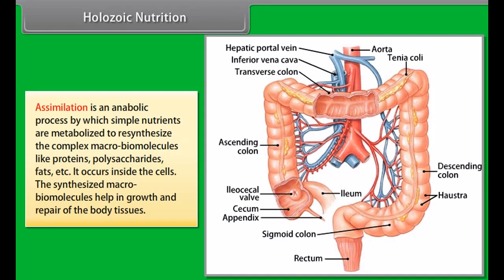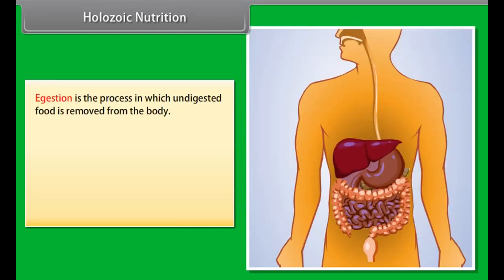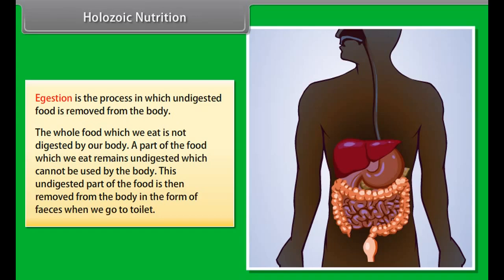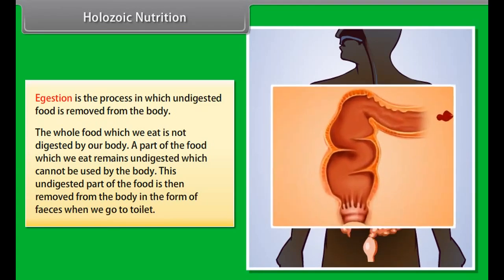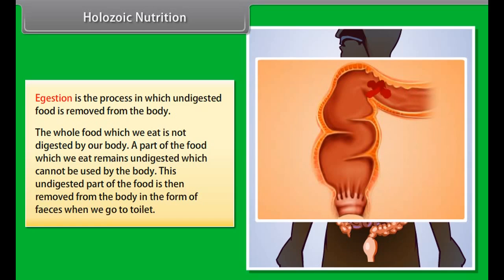Absorption is the process by which diffusible nutrients pass through the wall of the alimentary canal into blood and lymph. It involves both physical processes like diffusion and osmosis, and active processes like active transport of glucose and amino acids. Assimilation is an anabolic process by which simple nutrients are metabolized to re-synthesize complex macromolecules like proteins, polysaccharides, and fats. It occurs inside the cells and the synthesized macromolecules help in growth and repair of body tissues.